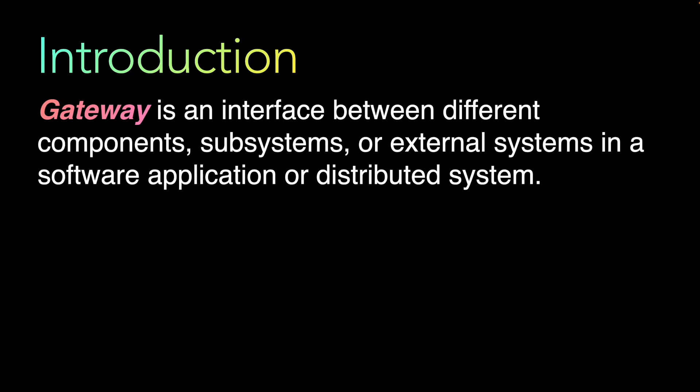So what exactly is a gateway? A gateway is an interface between different components, subsystems, or external systems in a software application or distributed system. Gateways help manage the flow of data and flow of control access, and provide a means to decouple different parts of the system. There are multiple types of gateway patterns, but the five most used ones are what we'll cover.